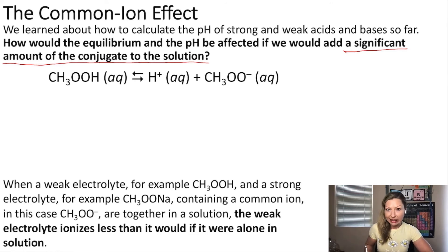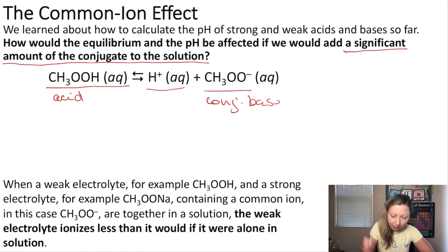Let's take a look at an example. Let's say that I have acetic acid, so this is going to be my acid in this dissociation reaction. I'm going to make H+ ions plus acetate ions, and the acetate ions are actually my conjugate base ions.